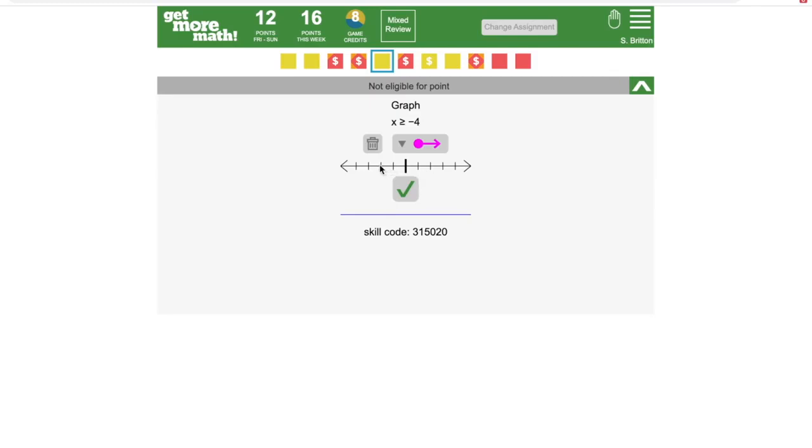The mark in the middle of the number line is 0, so negative 4 is here. This is where the ray begins. Now I'm just clicking somewhere to the right of that point so that my ray goes in the correct direction.